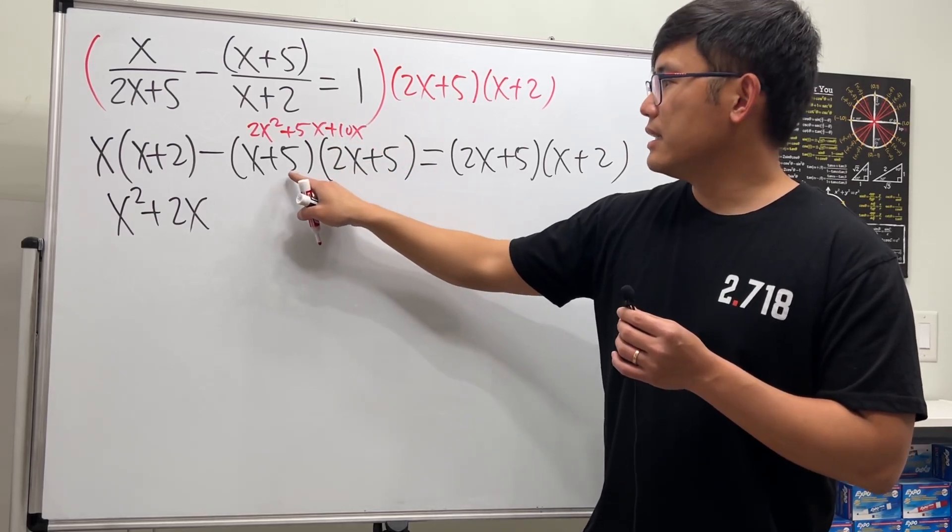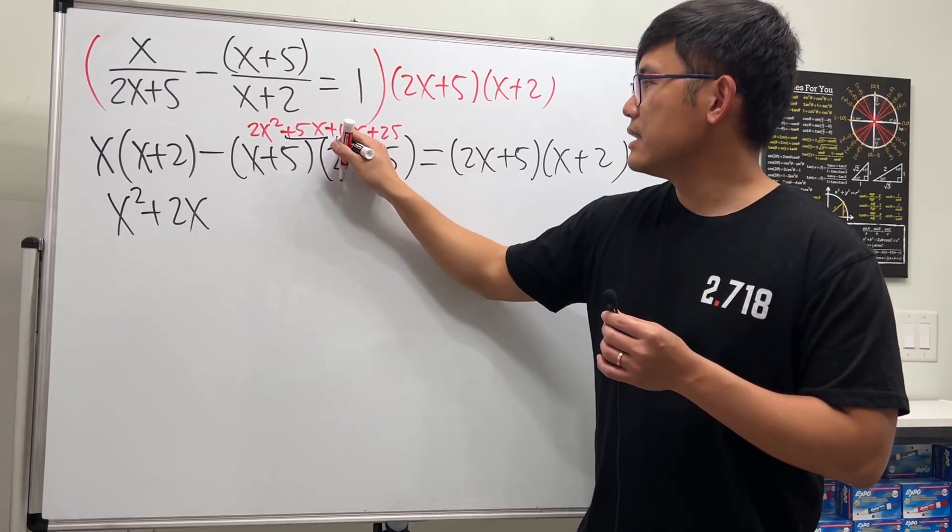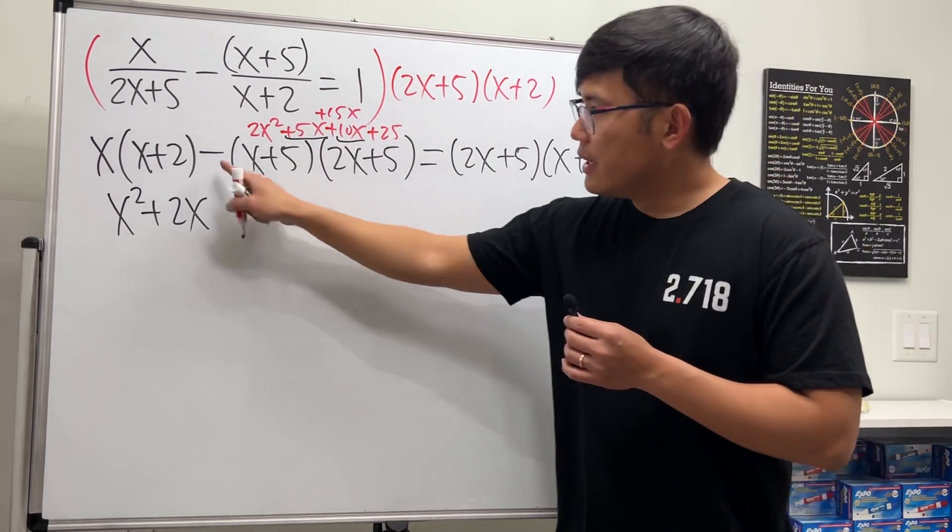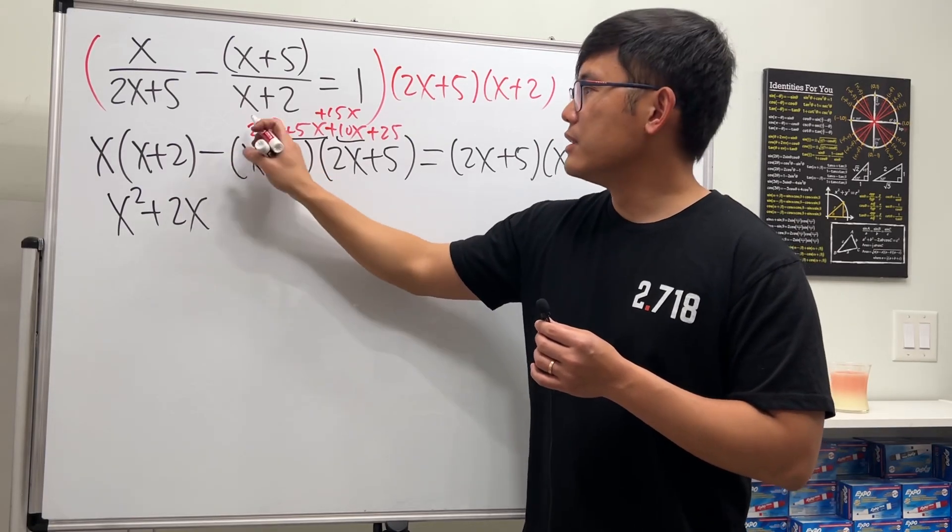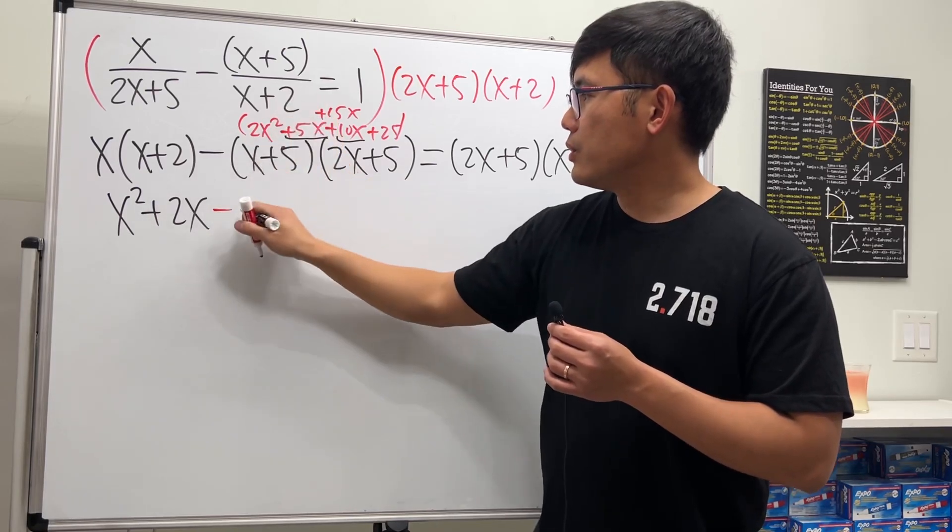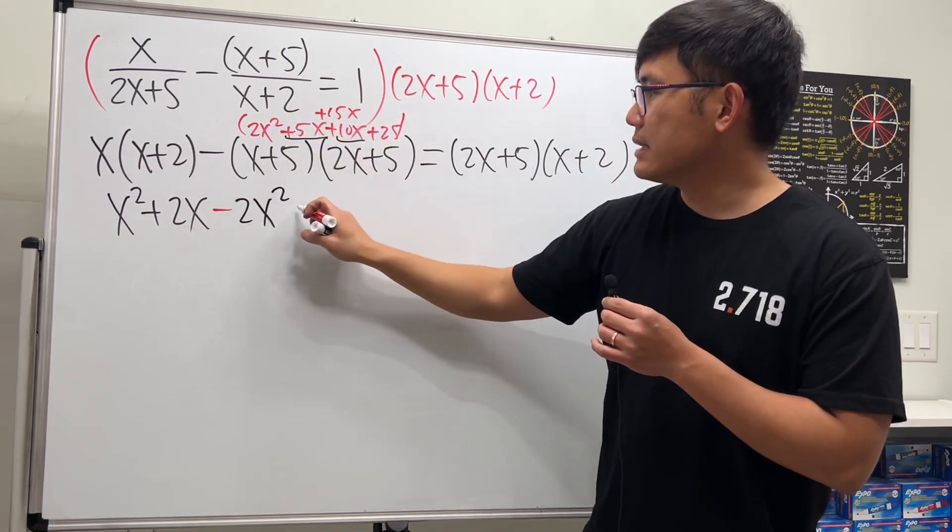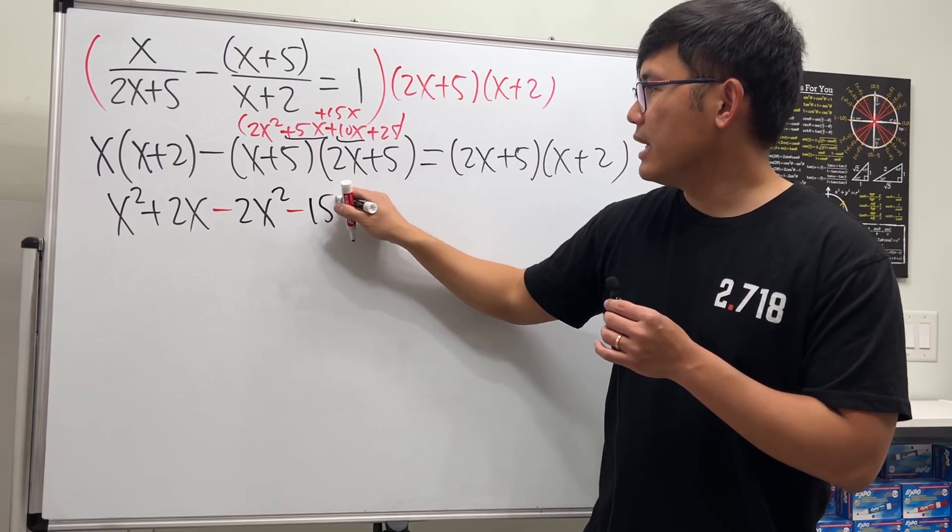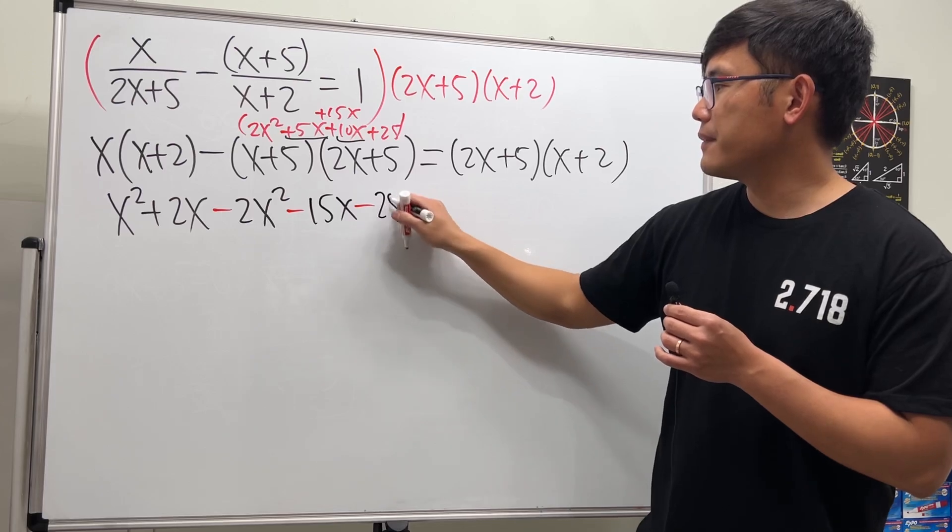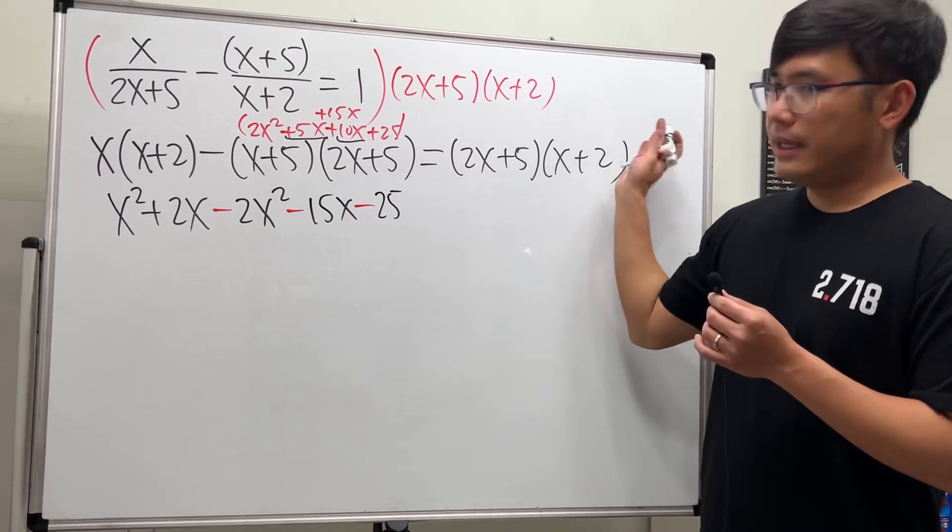Then this times that is plus 5x, and then this times that is plus 5x, and this times that is plus 10, so that is plus 15x. Here we have a minus though, so be sure to distribute it inside. We will have minus 2x squared, and then minus times that is minus 15x, and then minus times that is minus 25—just the good old algebra steps for all this.